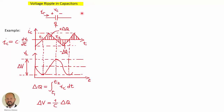Let's see now a couple of examples of ripple calculation. Here on the left, we have an example of voltage ripple in capacitors, in which we are injecting a triangular waveform of current into the capacitor. In this area, when the current is positive, we are injecting charge into the capacitor, so the voltage is going to increase from a minimum value up to a maximum value.